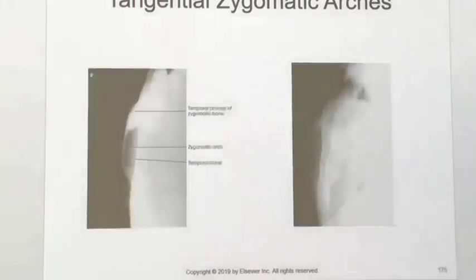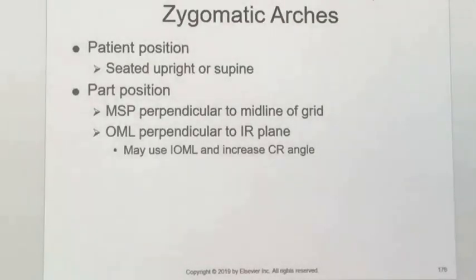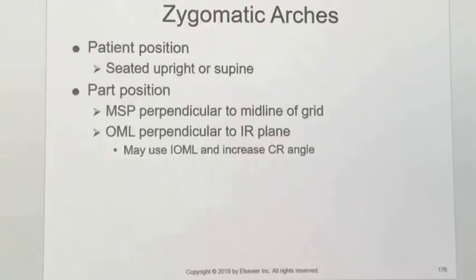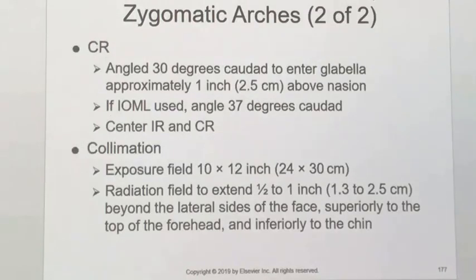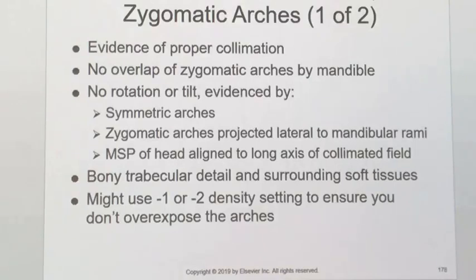The final view of the zygomatic arches will be a Towns, and it's a slightly modified Towns. Positioning-wise it's identical: OML is perpendicular to the image receptor. You can use the IOML just to increase the central ray angulation. The only difference is central ray location and collimation. Your central ray is going to be one inch above the nasion, 30 degrees to the OML, or 37 degrees to the IOML.